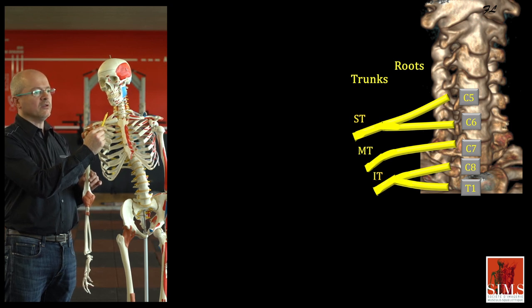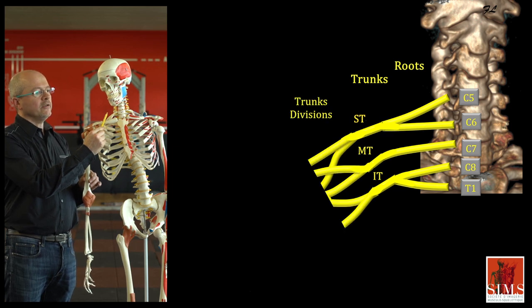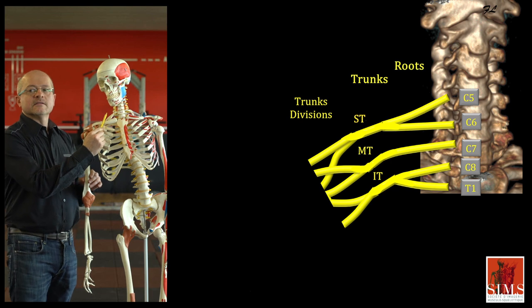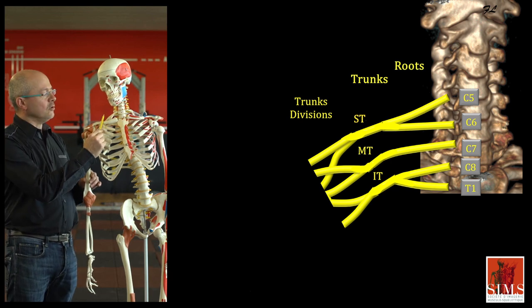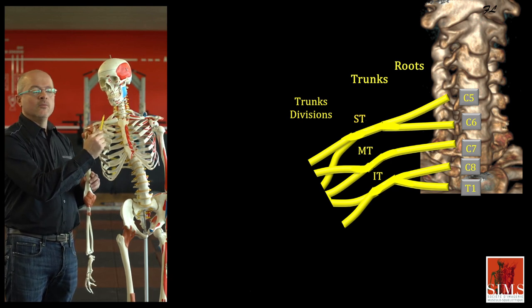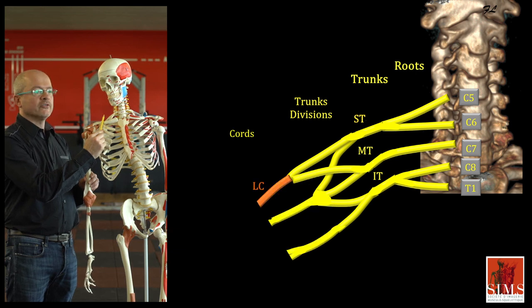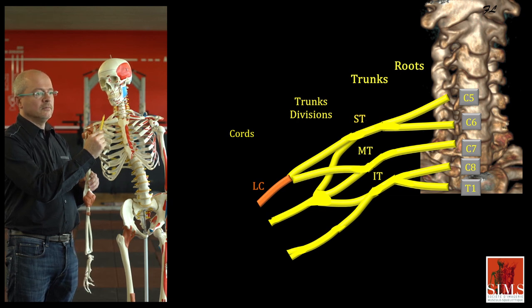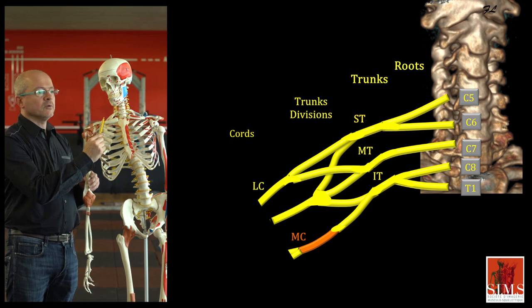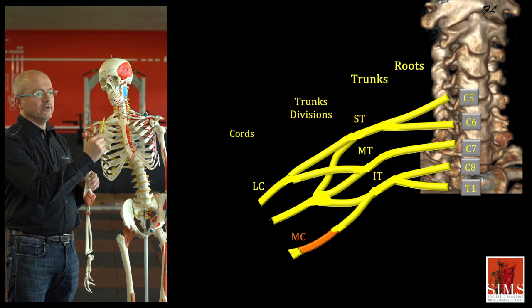These trunks are very short. Below the interscalene space, each trunk splits into a posterior division and an anterior division. These divisions then merge in the supraclavicular region and give rise to the cords. The lateral cord is formed by the joining of the anterior divisions of the superior and middle trunks. The medial cord is an extension of the anterior division of the inferior trunk, and the posterior cord is formed by the joining of all posterior branches.